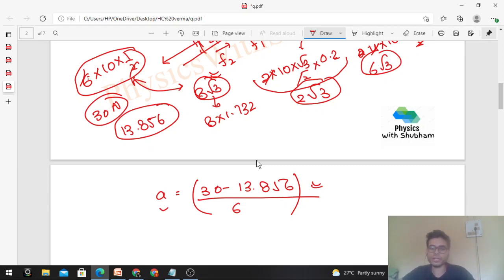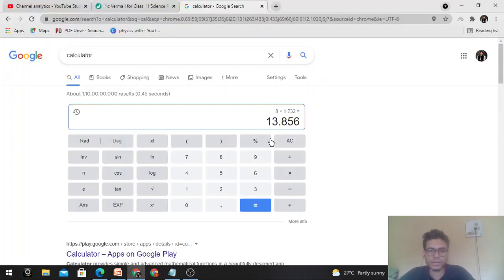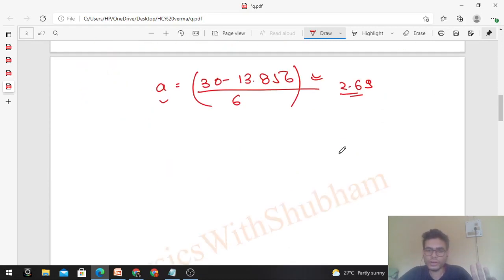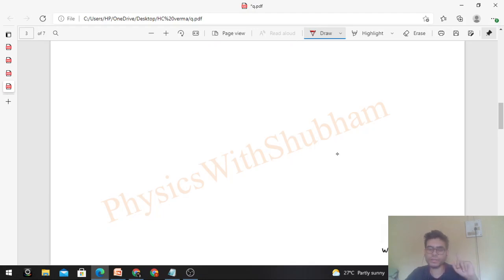So 30 minus 13.856 divided by 6. How much is this? 2.69. So 2.69 is the acceleration. The two blocks move downward with this acceleration. Now we can find the normal force between the two blocks in the case when both blocks move with common acceleration.